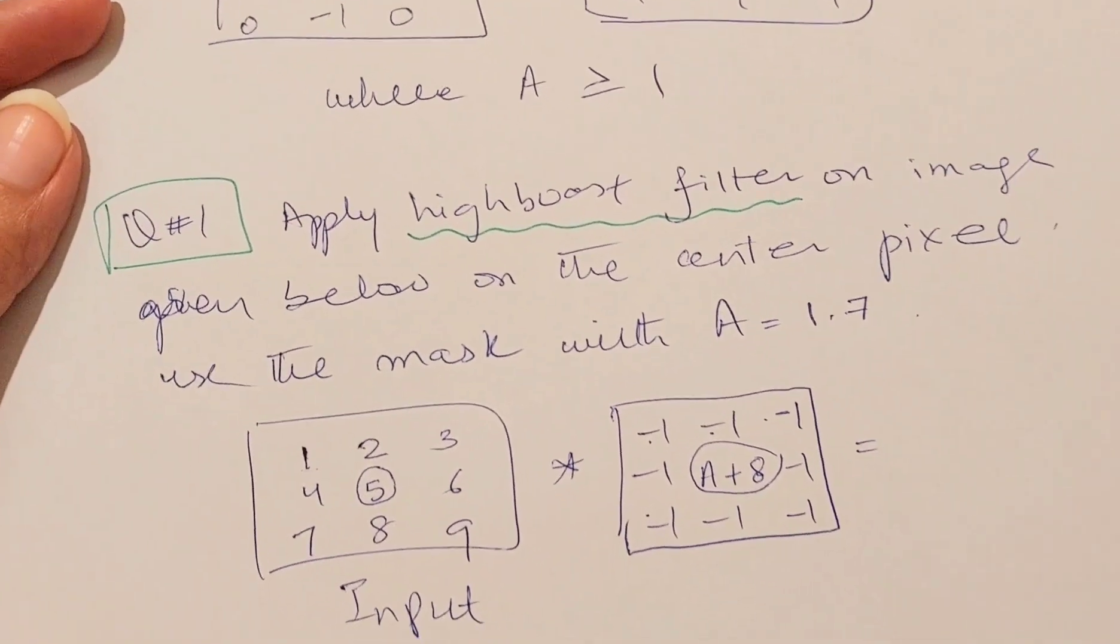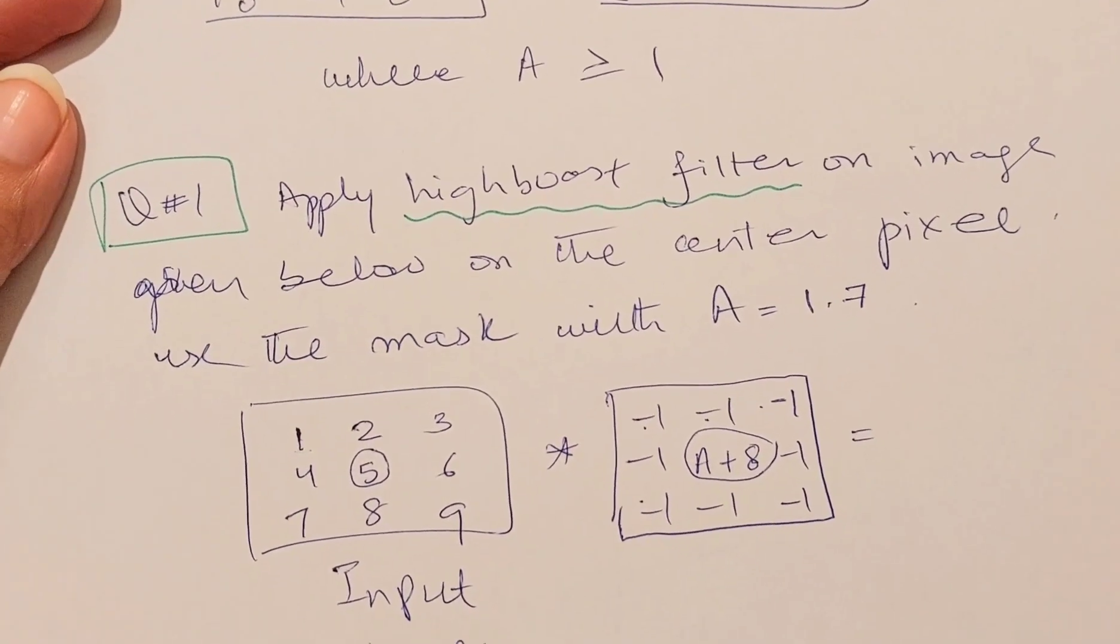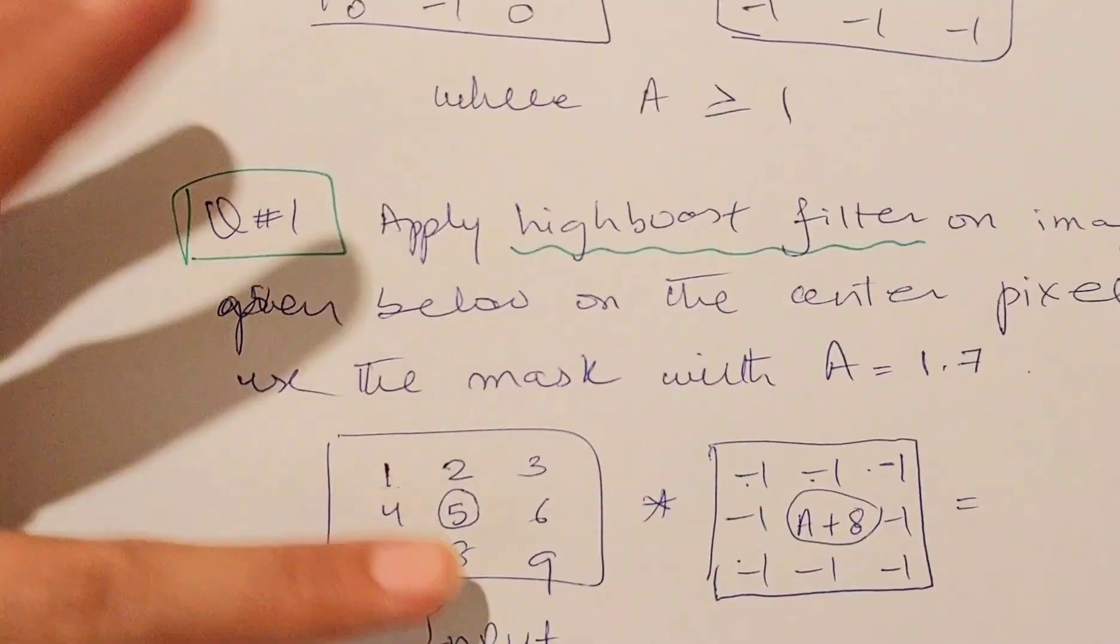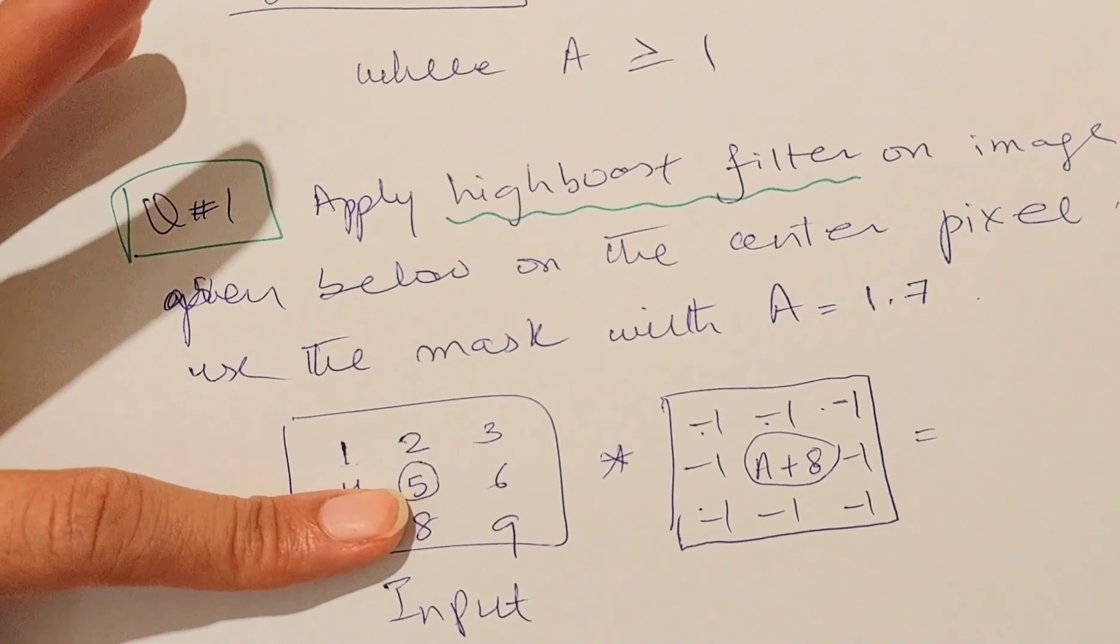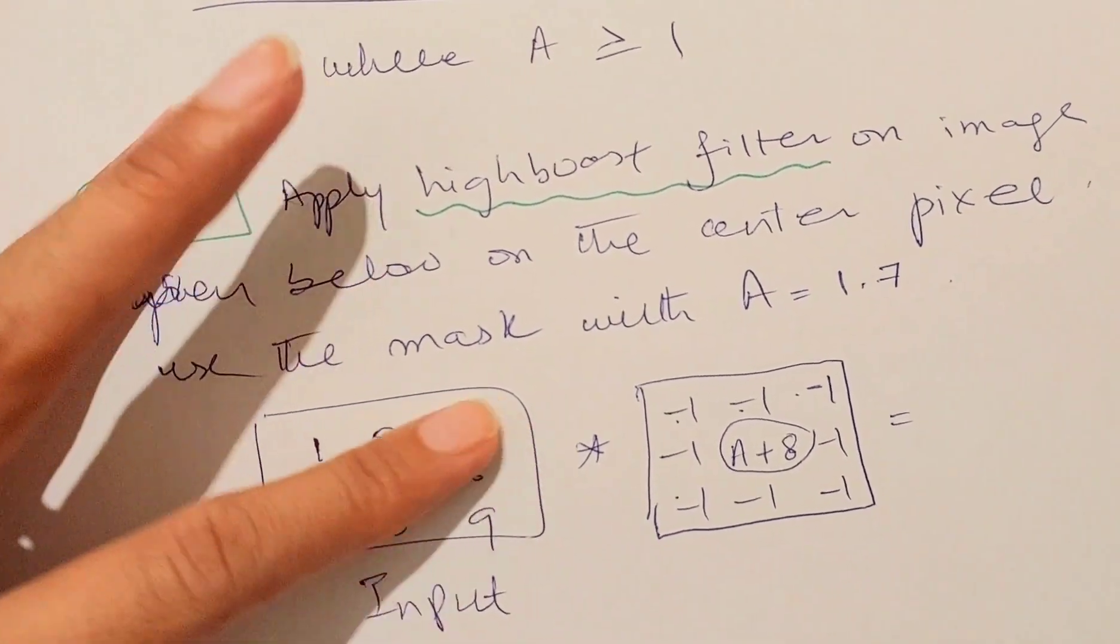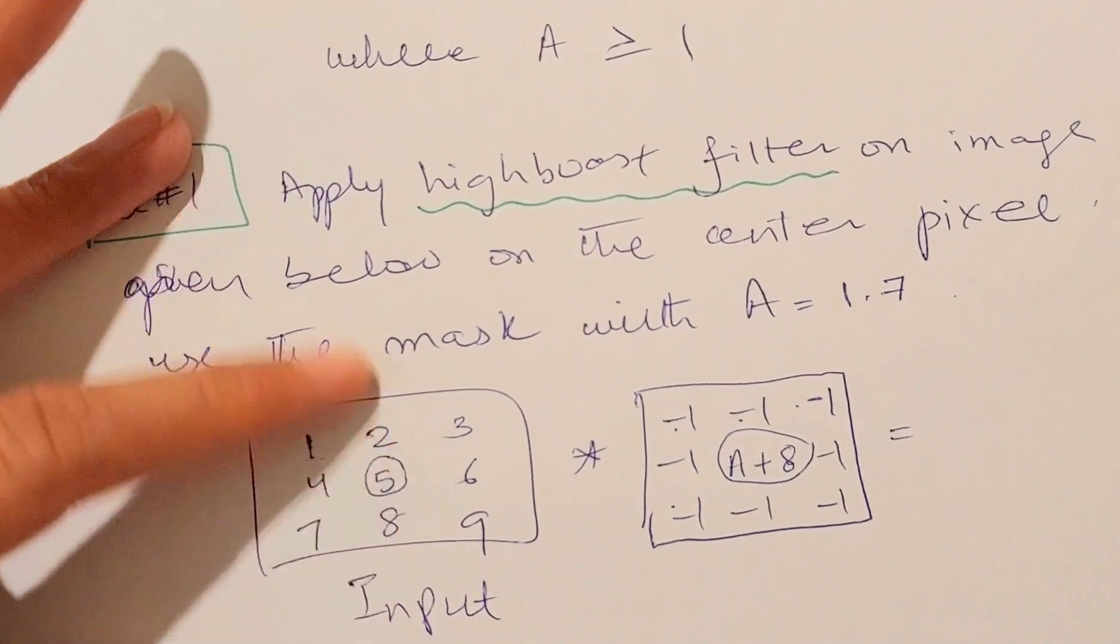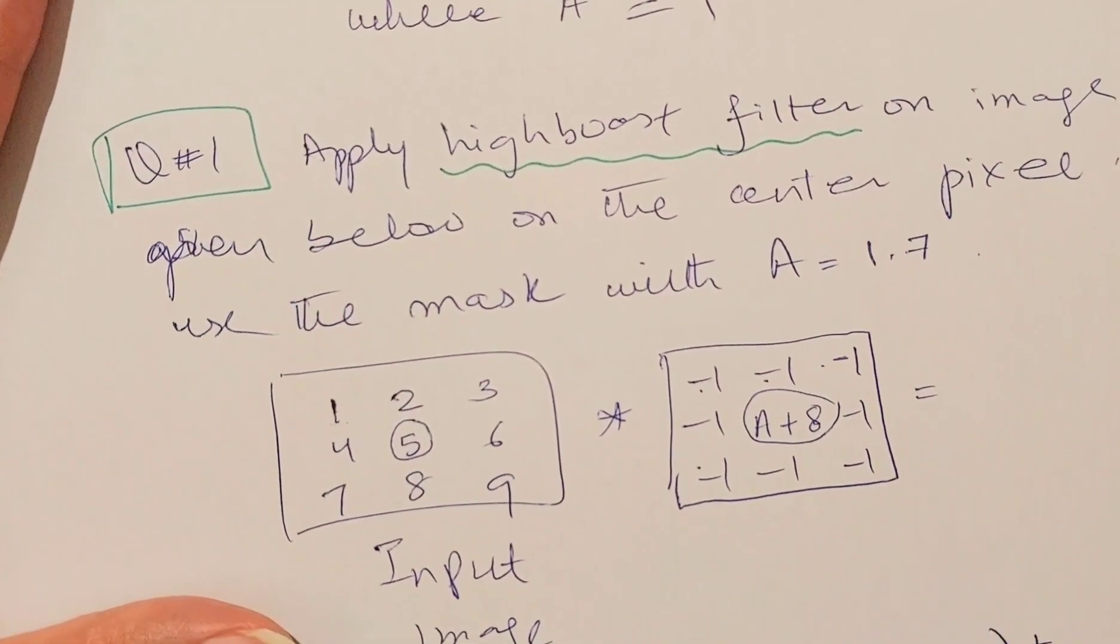We know that whenever we apply image enhancement with the help of spatial filters, only the value of the center pixel of the image changes. Although we are applying the operation with all the neighboring pixels, the value of only the center pixel changes. This is something you have to keep in mind before solving the question.